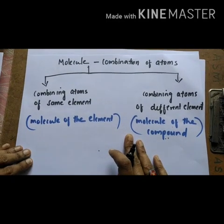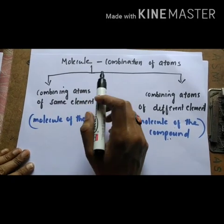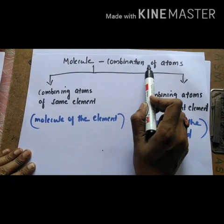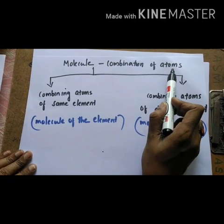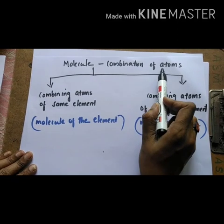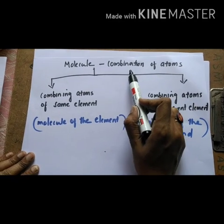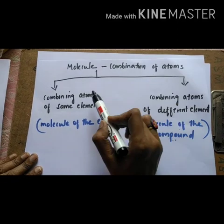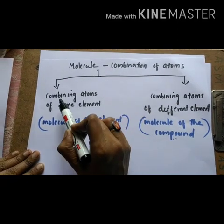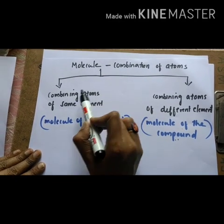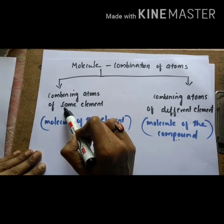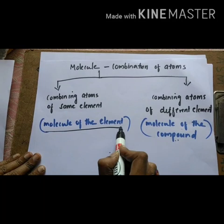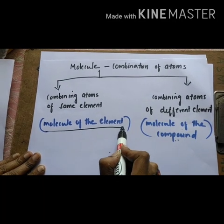The next topic is Molecule. A molecule is formed by the combination of atoms — that means atoms combine to form a molecule. This molecule can be formed by two ways. The first method is: a molecule is formed by combining atoms of the same element. That type of molecule is called a Molecule of the Element.